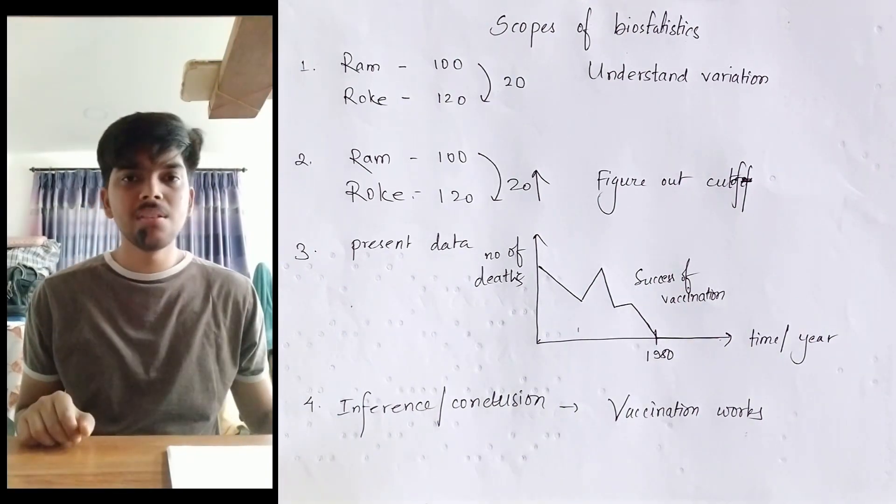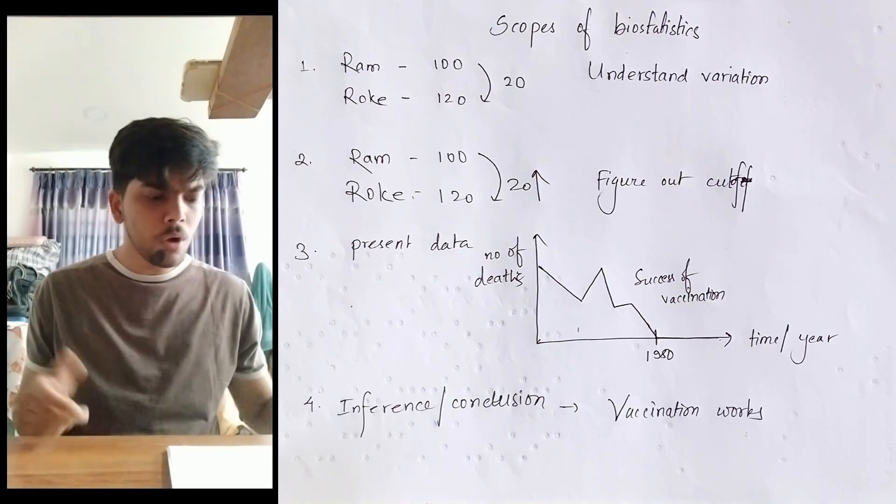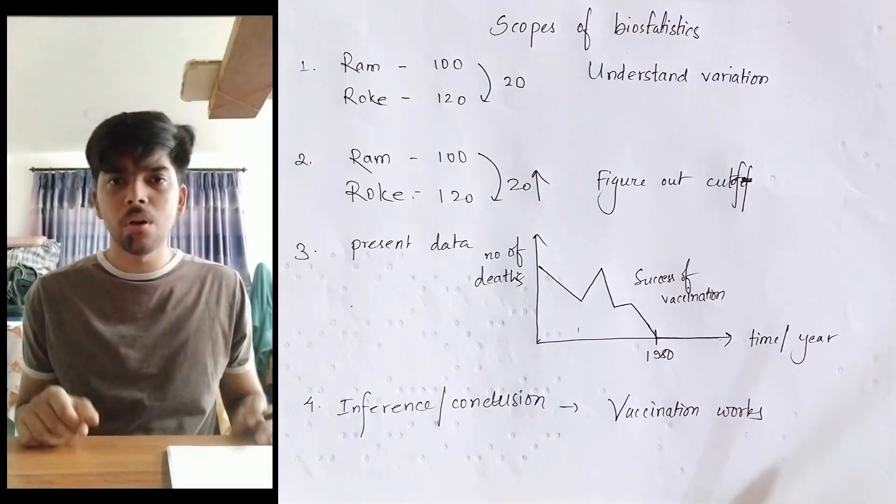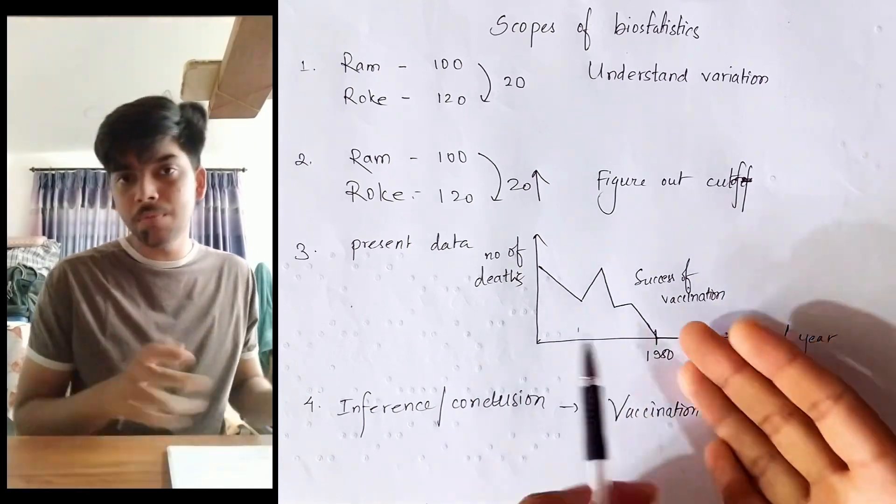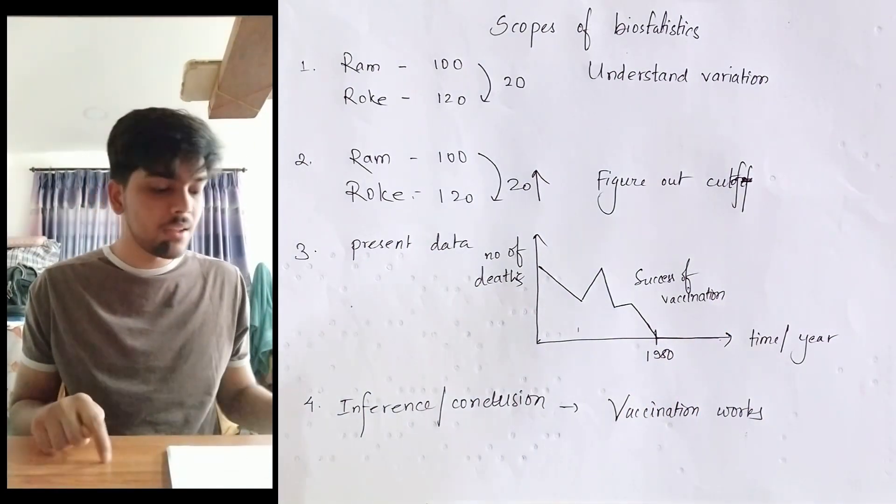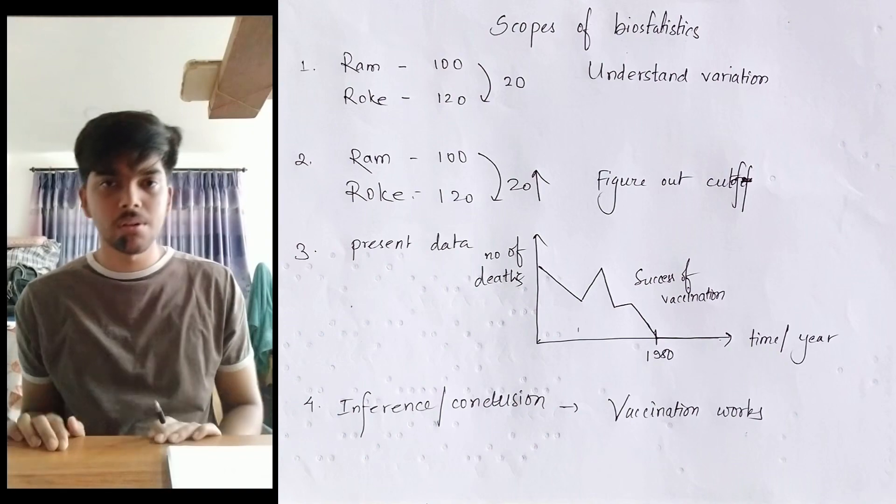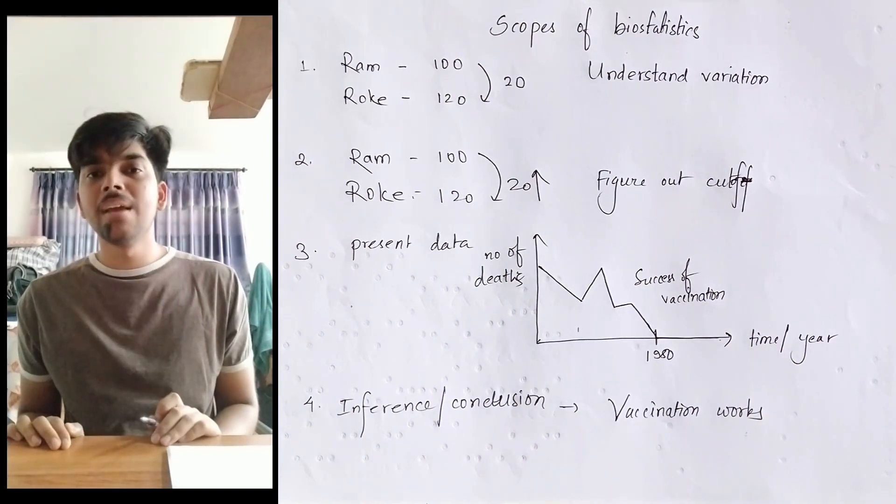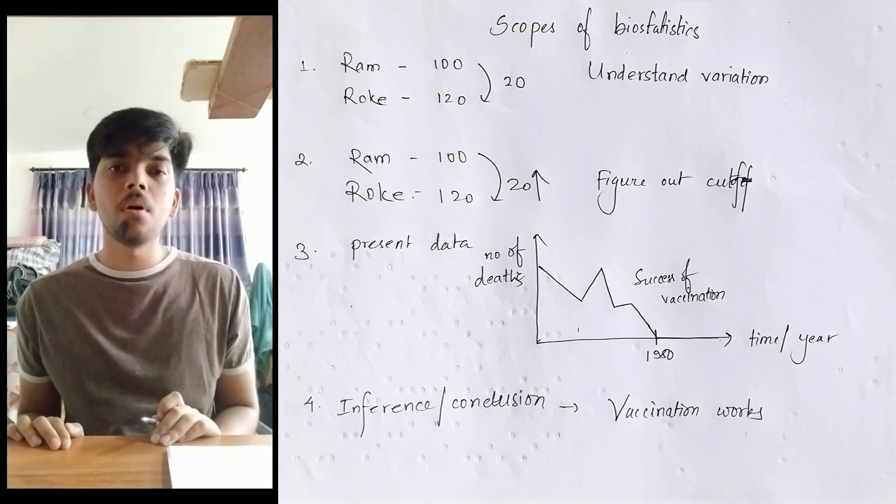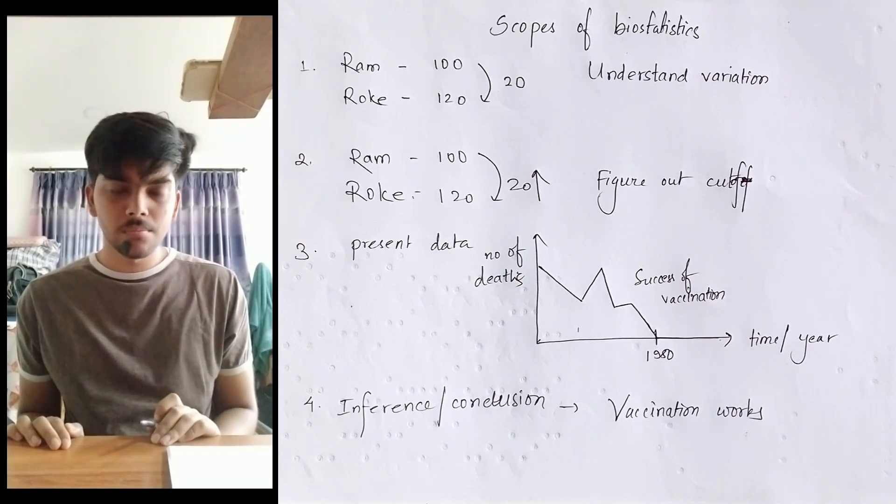And number four: inference or conclusion. What do we conclude from this graph? What do we conclude from this proper presentation of data shown with the help of this graph? We conclude that vaccination actually works, because it was due to the success of vaccination against smallpox that smallpox was finally eradicated.